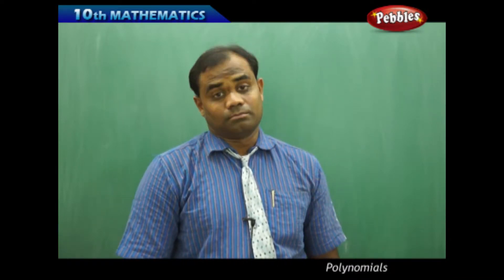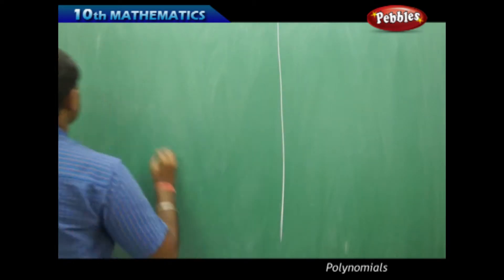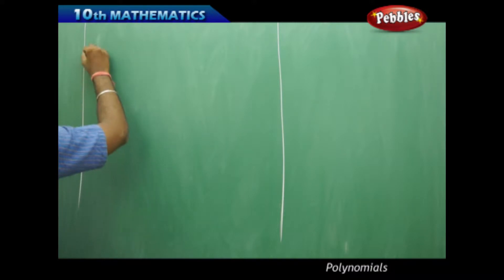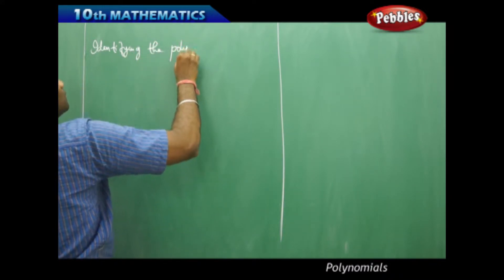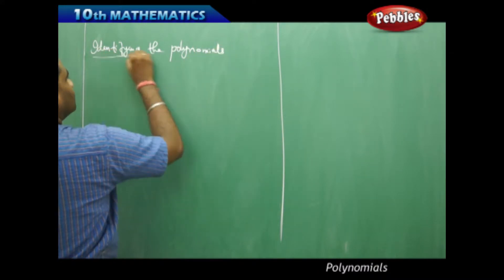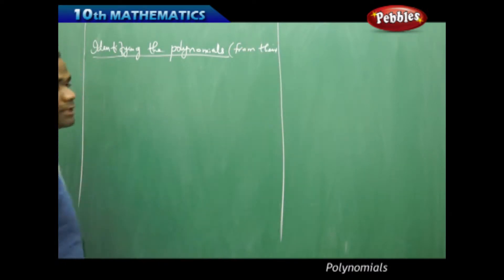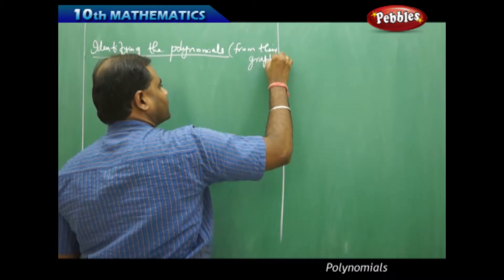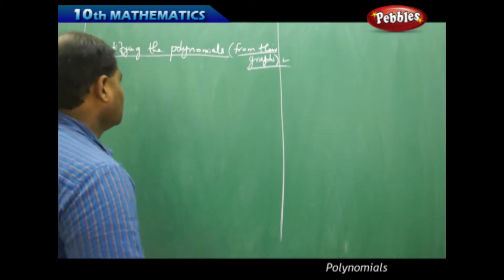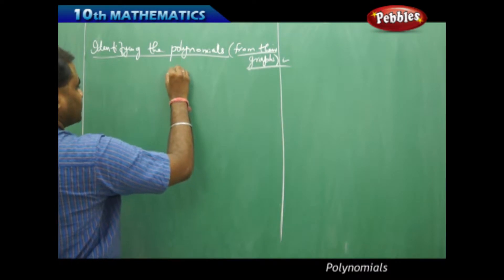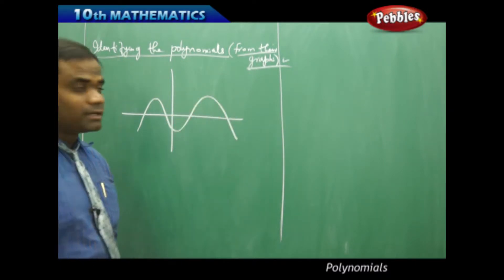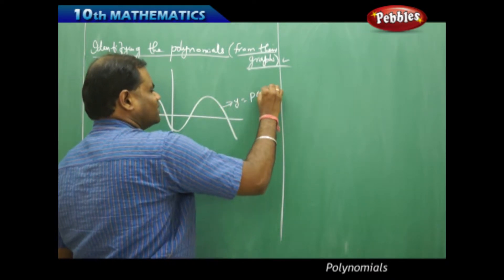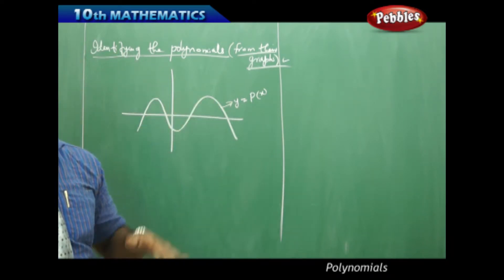Let's start with an example problem. Identifying polynomials from their graphs is a very interesting reverse process. For a given polynomial graph whose complete description we don't know, how do we understand this polynomial just by seeing the shape of the graph?